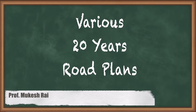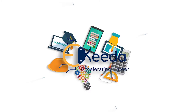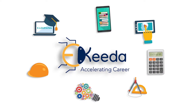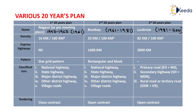Hello students. Today we are going to study various 20-year road plans. The first 20-year road plan is known as the Nagpur road plan. The second is known as the Bombay road plan and the third is known as the Lucknow road plan. The duration of the Nagpur road plan is from 1943 to 1963, but this plan was completed in 1961.